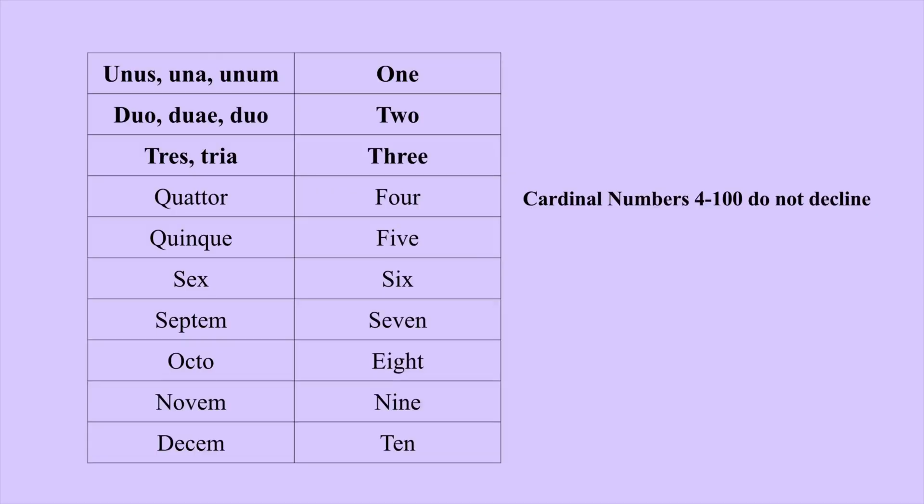Cardinal numbers are one, two, three, four, five, six, seven, eight, nine, ten, eleven, twelve. Written out one through ten, we can see: unus -a -um, duo/duae/duo, tres/tria, quattuor, quinque, sex, septem, octo, novem, decem.